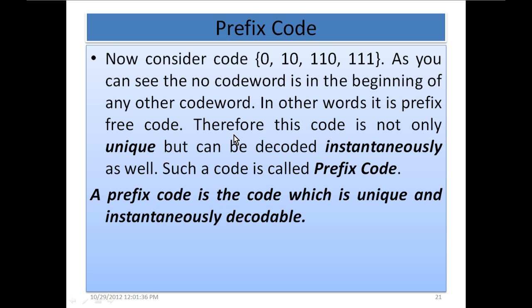This code is not only unique but can also be decoded instantaneously. So there are two characteristics of a variable length code: one is that it should be unique, and the other is that it should be instantaneously decodable. If any variable length code has both these characteristics, then it is called a prefix code — a code which is unique and instantaneously decodable.